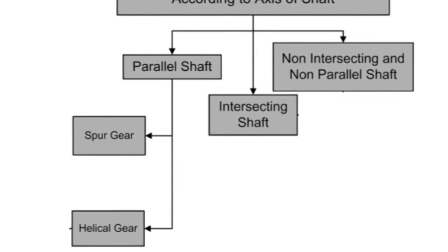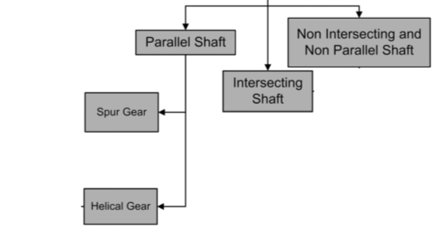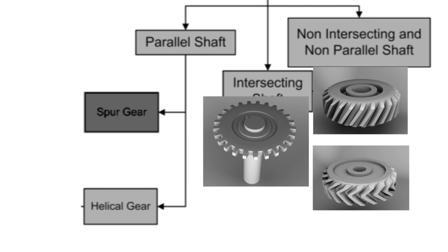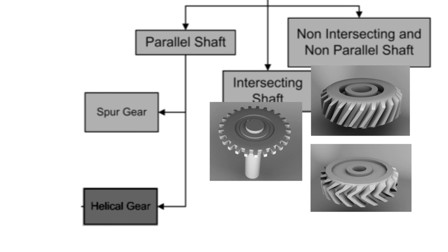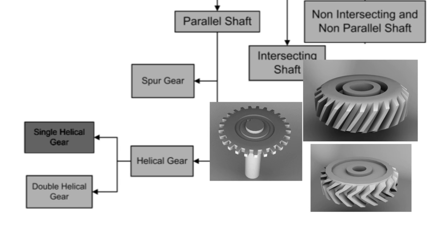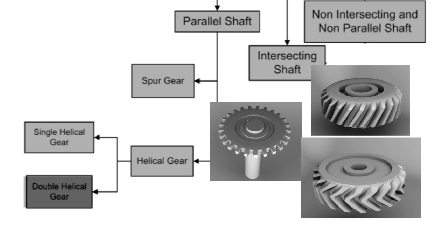Parallel shaft gears are classified into two groups: spur gears and helical gears. Further, helical gears are classified into two groups: single helical gears and double helical gears, also known as herringbone gears.